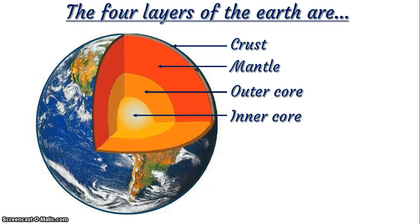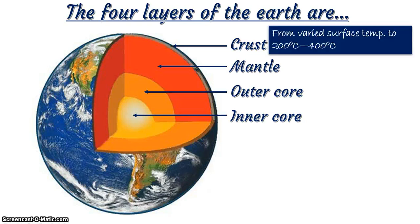What is the crust? It's very simple. It is the outermost layer of the Earth and it has temperatures that range from even negative degrees Celsius, zero, up to 200 to 400 degrees Celsius as you go deeper into the Earth's crust.